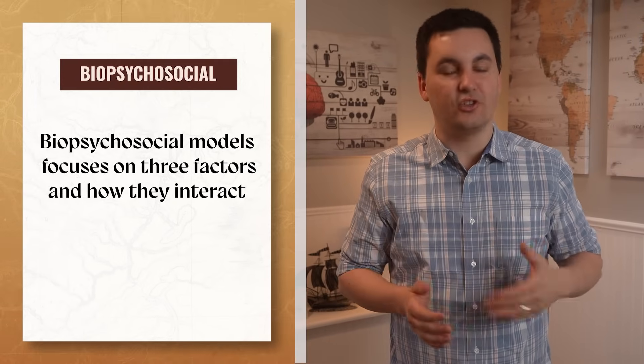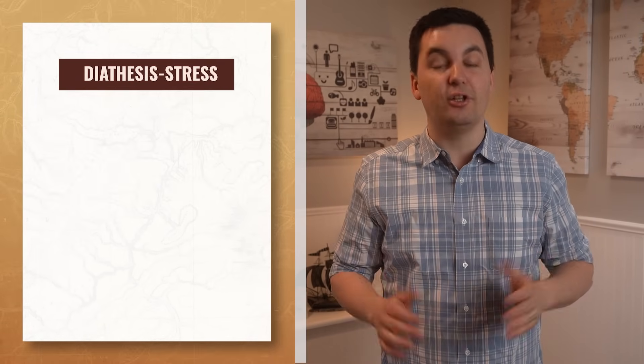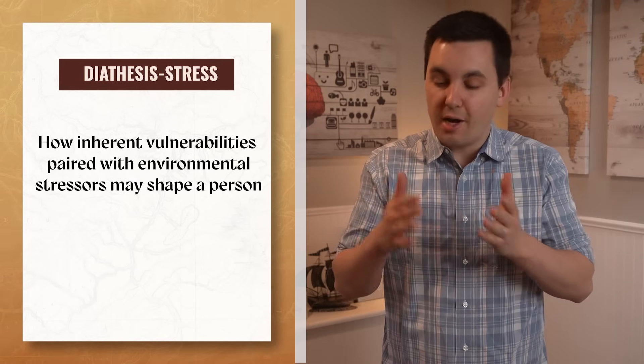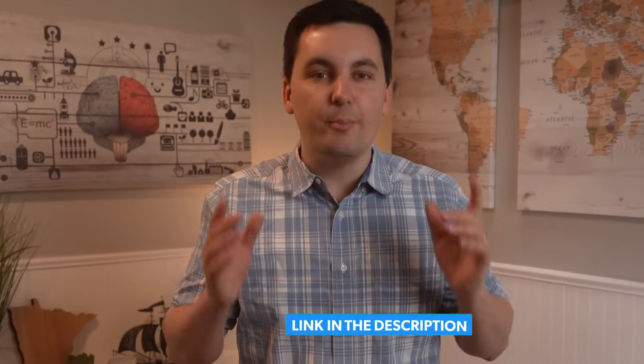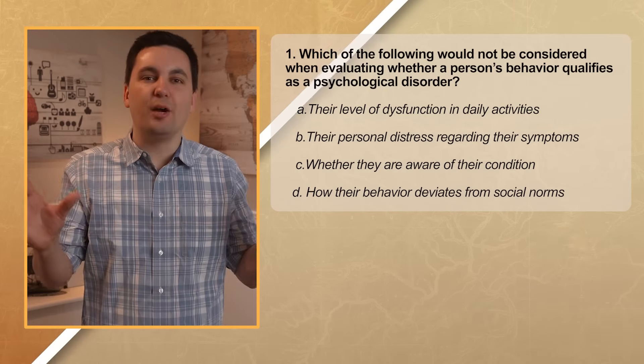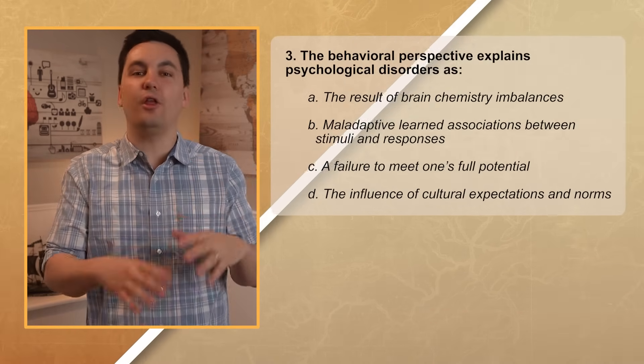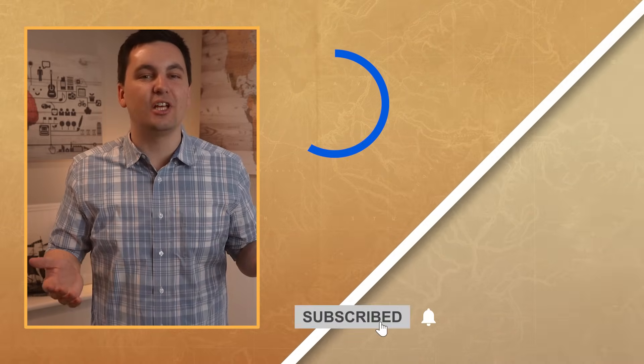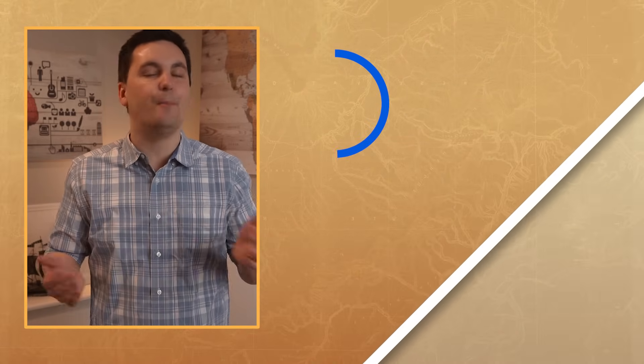Both of these models highlight the importance of approaching mental disorders from multiple dimensions. The biopsychosocial model focuses on three factors and how they interact, while the diathesis-stress model emphasizes how inherent vulnerabilities paired with environmental stressors may shape a person. Next time we're going to go over all of the different psychological disorders that you need to know for AP Psychology. As always, thank you so much for watching, and I'll see you next time.